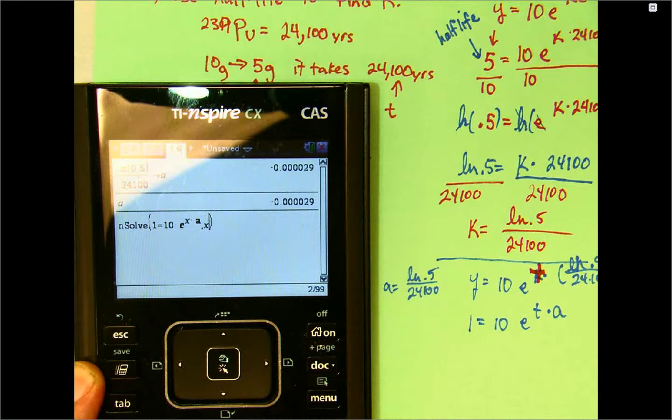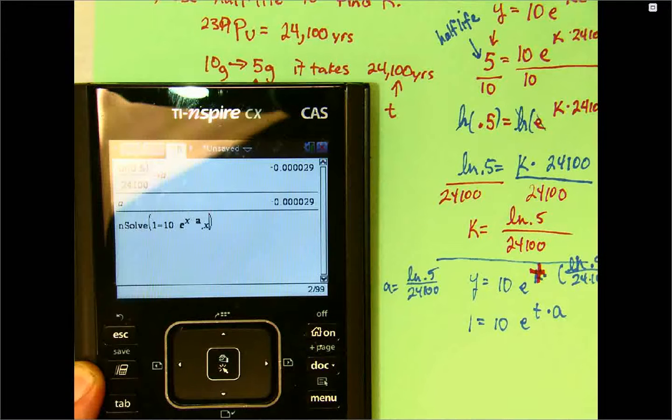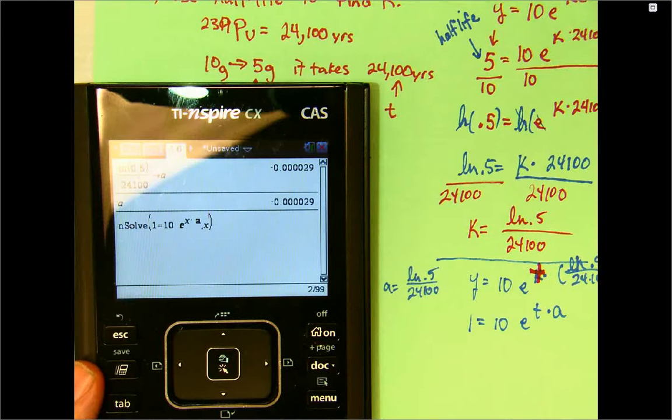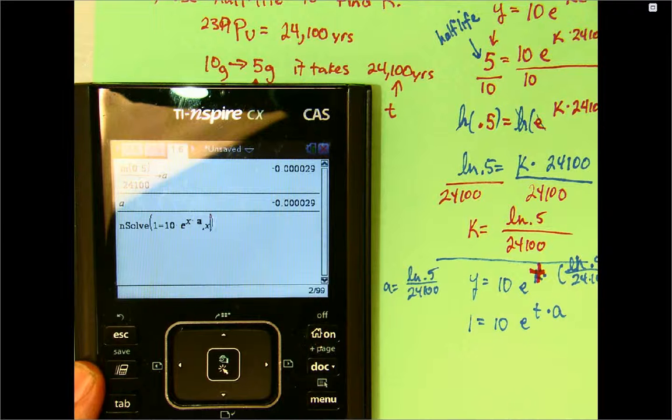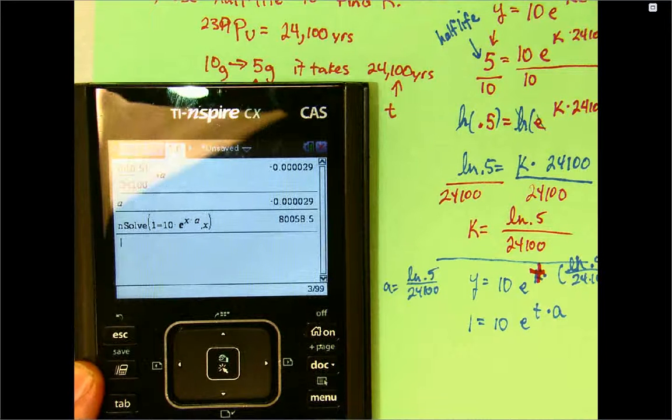Well, I know we're looking for T, but the calculator really only recognizes x, y, and z of your variables. So, I just changed the x to T. And, that is actually the answer. So, it ended up working out really good.